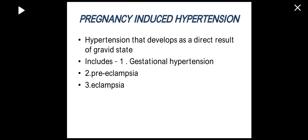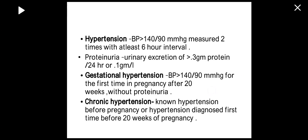Pregnancy-induced hypertension includes preeclampsia, eclampsia, or gestational hypertension. Hypertension is defined as blood pressure more than 140/90 mmHg on two occasions six hours apart in a previously normotensive and non-proteinuric patient after 20 weeks of pregnancy. Proteinuria is defined as urinary excretion of more than 300 milligrams of protein in 24 hours.